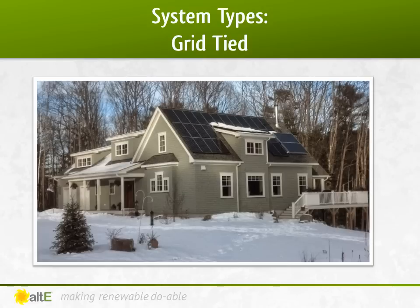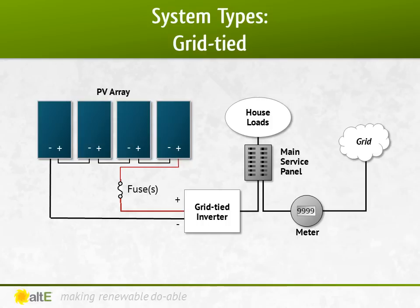Don't let anyone tell you that solar only works in southern deserts. This photo was taken in Maine, where solar is extremely popular and productive. Little known secret: solar panels love the cold weather. In a grid-tied system, the solar panels are wired through fuses to a grid-tied inverter. The inverter is wired to a new breaker in your main AC panel. The electric company may require you to switch out your power meter to a bi-directional meter, which can spin backwards when selling power and forward when buying. This is known as net metering.